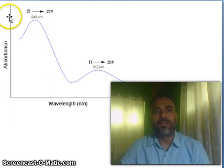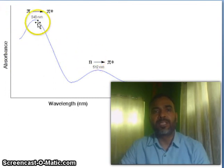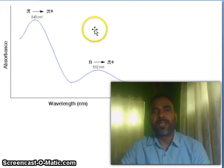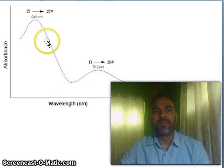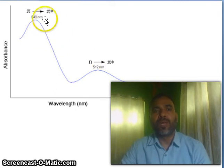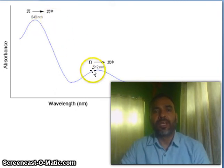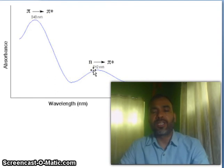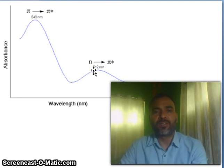You can see the absorptions here, and according to the y-axis you will notice there is a difference in height also. Pi to pi star transition is an allowed transition, whereas n to pi star transition is a forbidden transition.